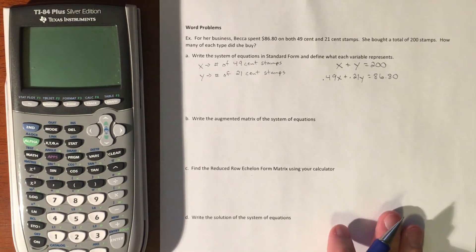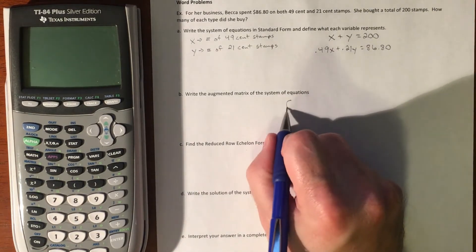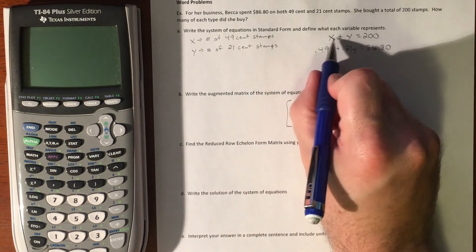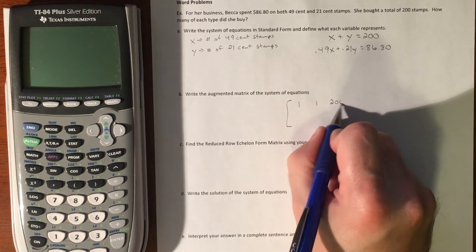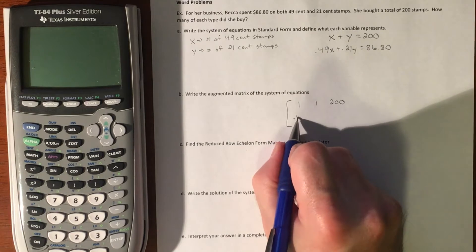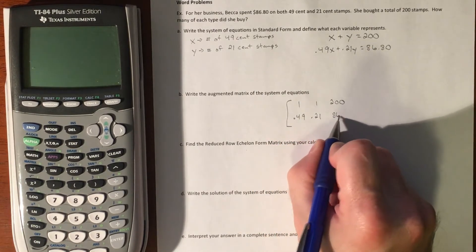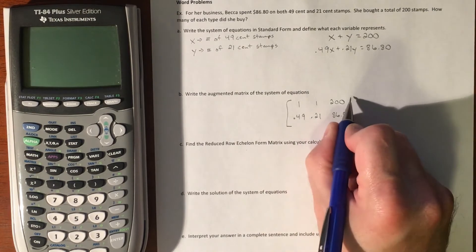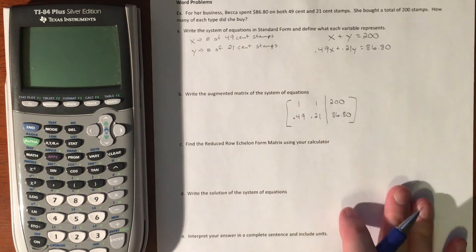Write it in an augmented matrix. We have [1, 1, 200] and [0.49, 0.21, 86.80]. This is our augmented matrix, and then we'll let the calculator do the reduced row echelon form.